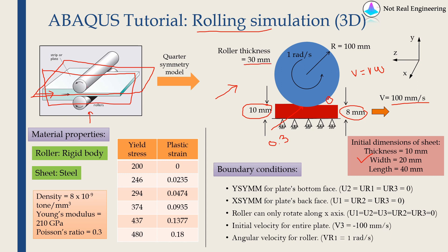We will assume friction at the point of contact with a coefficient of friction of 0.3. The roller thickness is 30 mm, which is thicker than the plate's width of 20 mm, so that when the sheet width increases, the full width remains in contact with the roller. The roller is modeled as a rigid body, so it requires no material properties. The steel sheet requires density (8×10⁻⁹ ton/mm³), Young's modulus, Poisson's ratio, and plastic properties defined as a table of yield stress versus plastic strain.